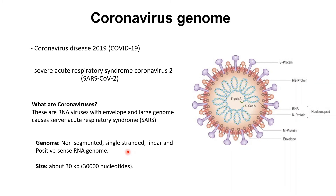Positive-sense RNA is the type of RNA that is capable of directly synthesizing proteins; in other words, it acts as messenger RNA and interacts with ribosomes during translation. The estimated size of the coronavirus genome is 30kb, or 30,000 nucleotides long.